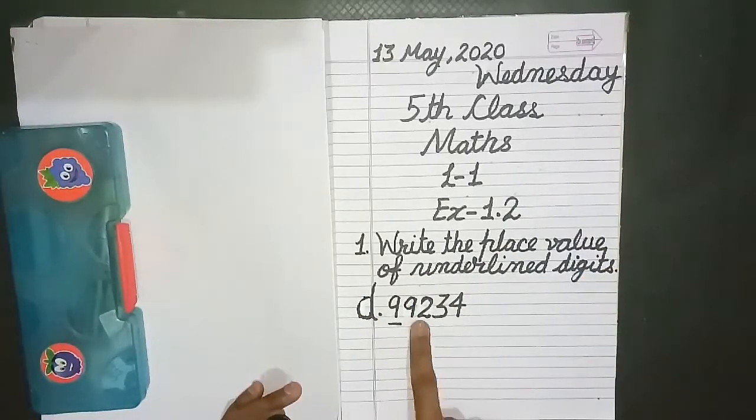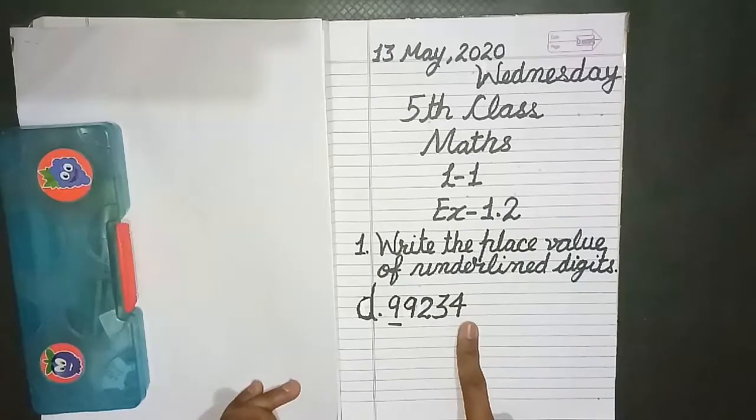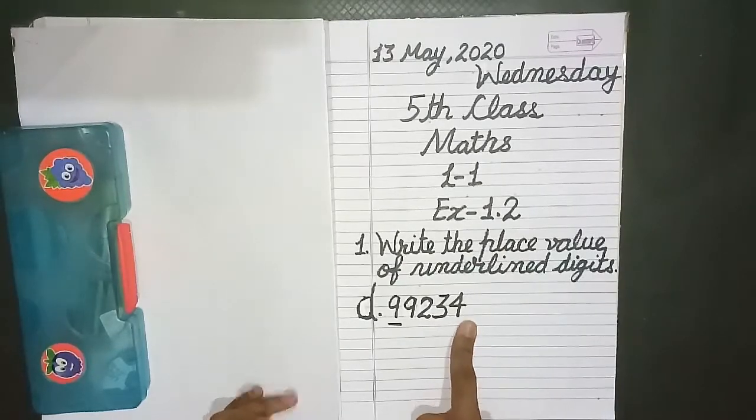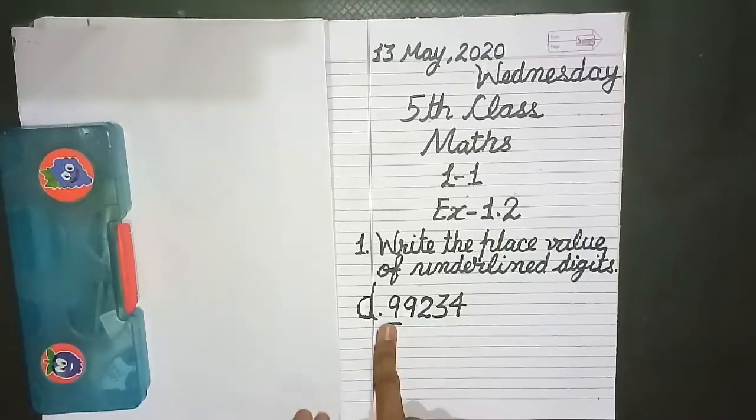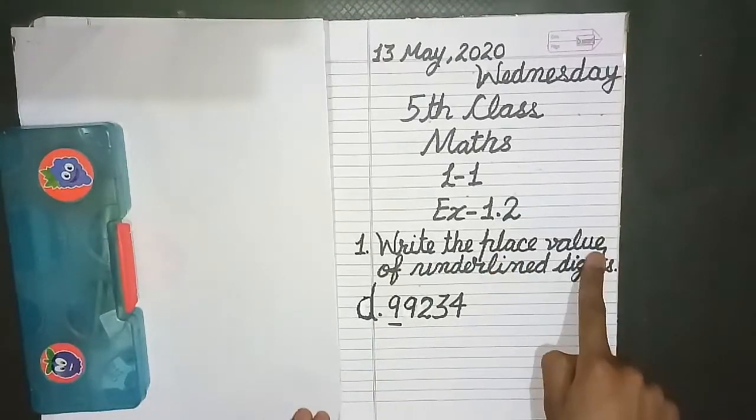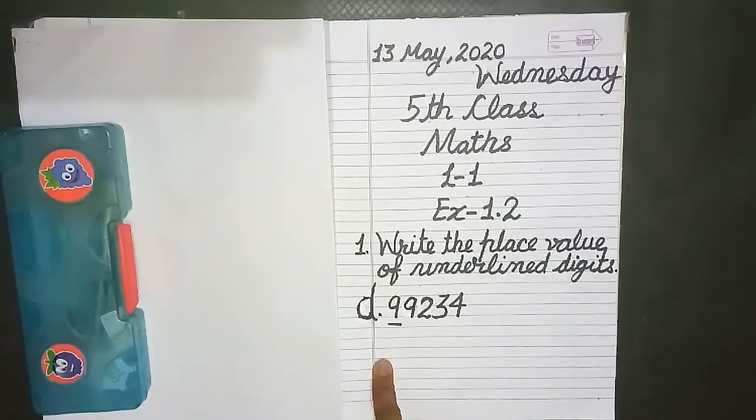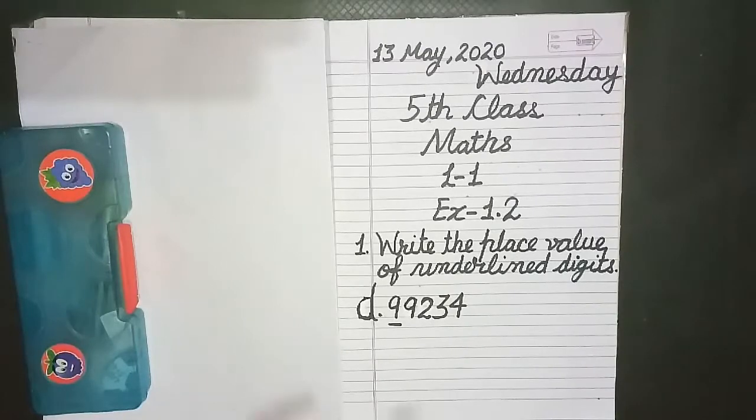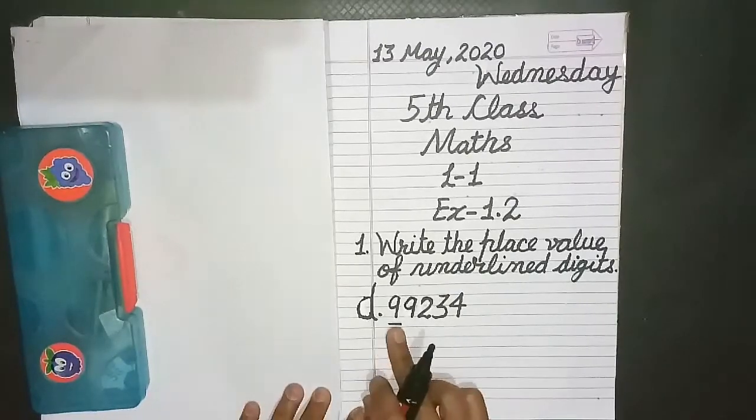Here you can see 9 is underlined, means we have to find the place value of 9. To find the place value of underlined digit, first of all we have to check how many numbers does it have at its right hand side.